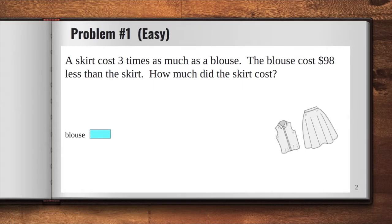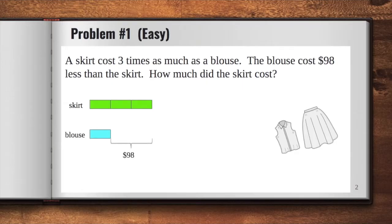We can represent that by drawing one unit. And for the skirt, we can draw three units since it costs thrice as much as the blouse. Now, we learned earlier that the blouse costs less than the skirt — by how much? By $98. And we can represent that in our model like this.